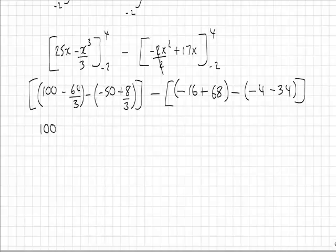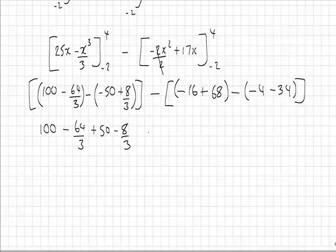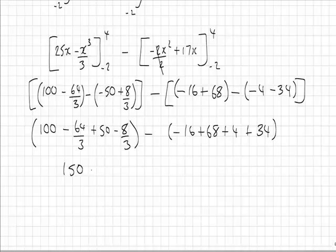so we have 100 minus 64 over 3 plus 50 minus 8 thirds minus, minus 16 plus 68 plus 4 plus 34. So if we gather some like terms now, we have 150 minus 72 over 3,